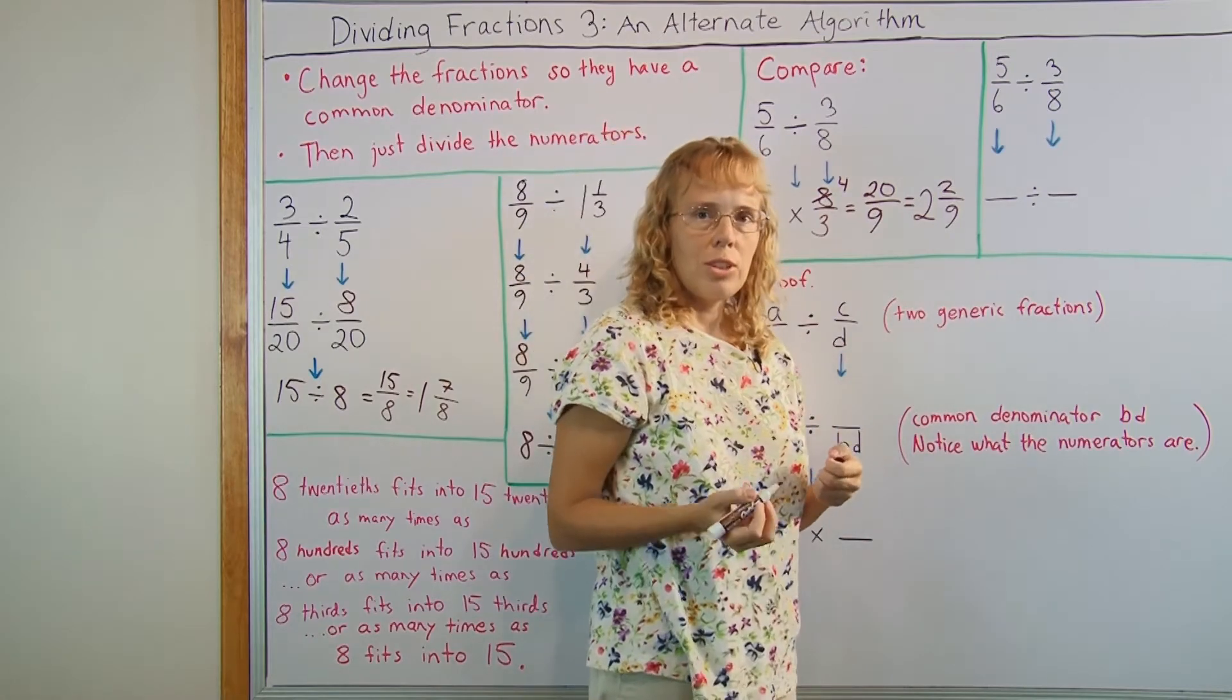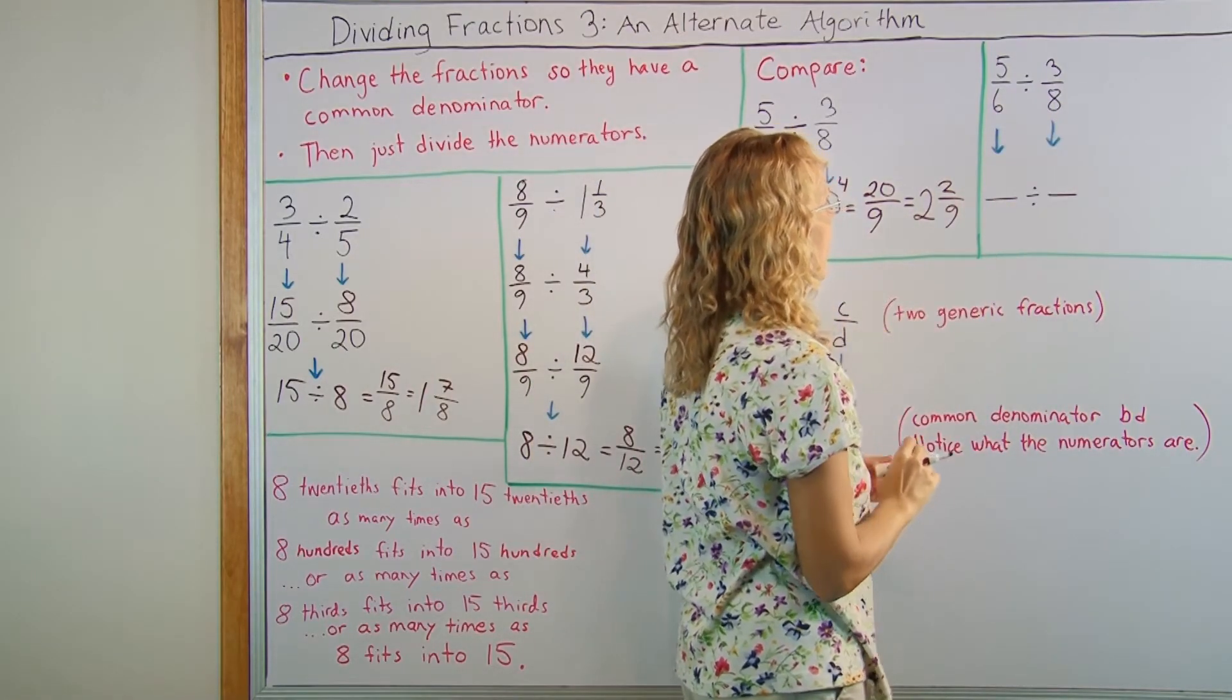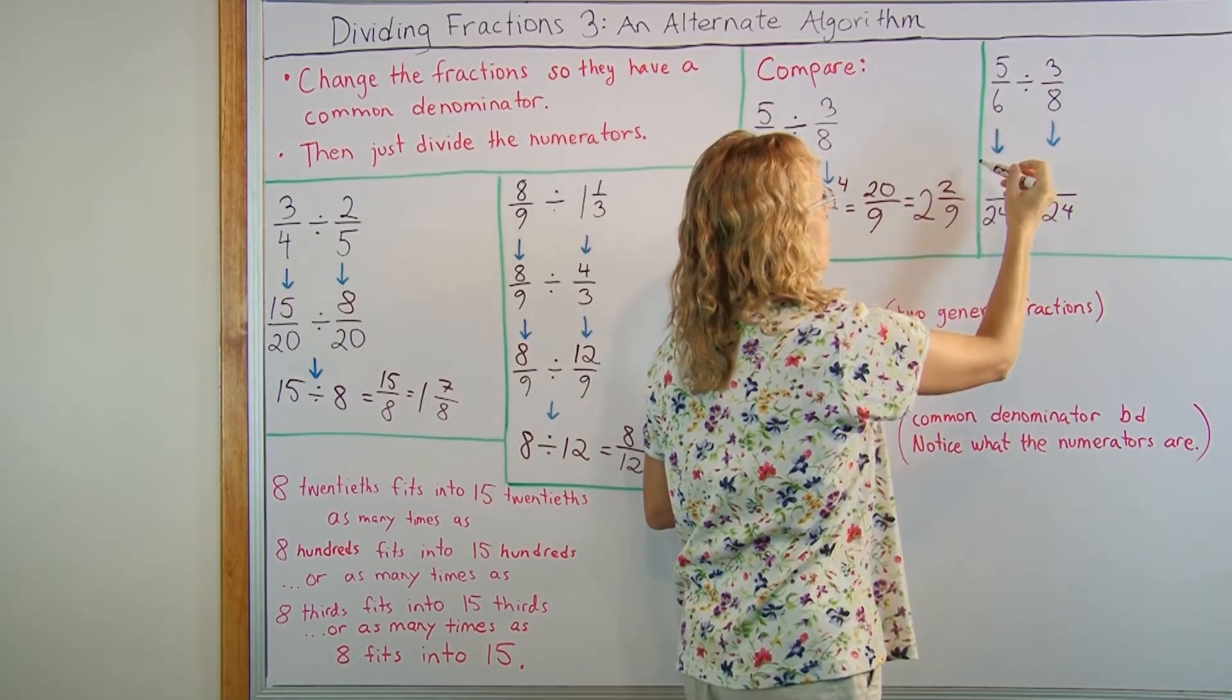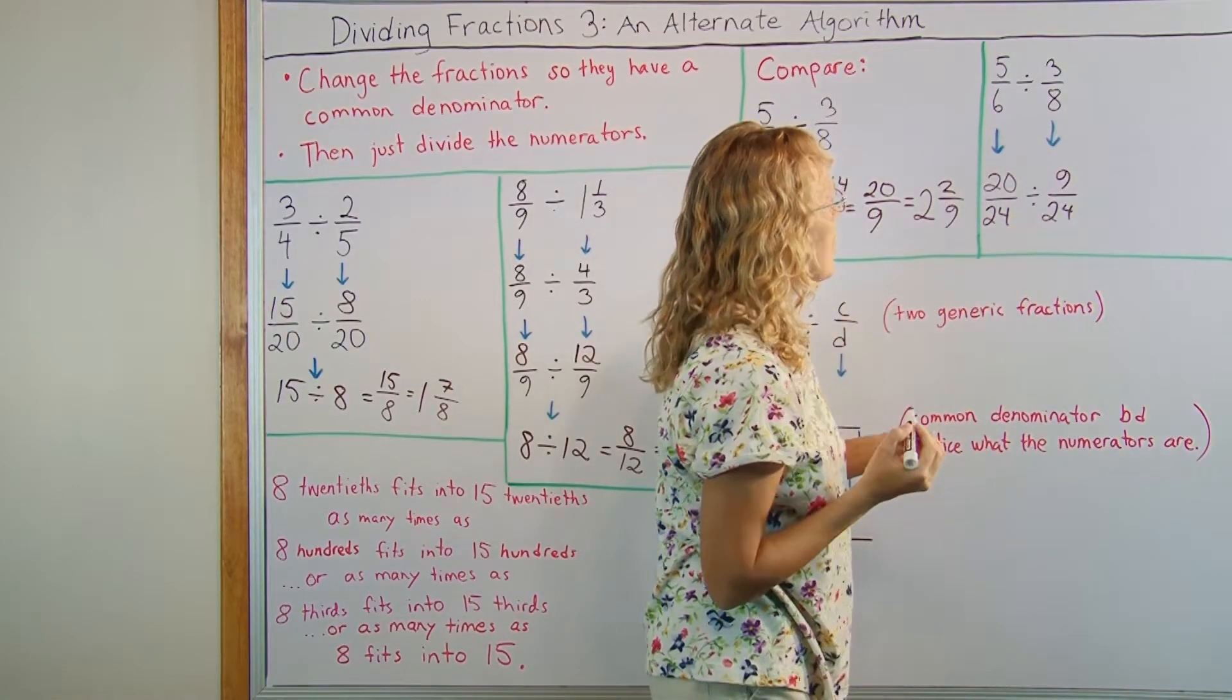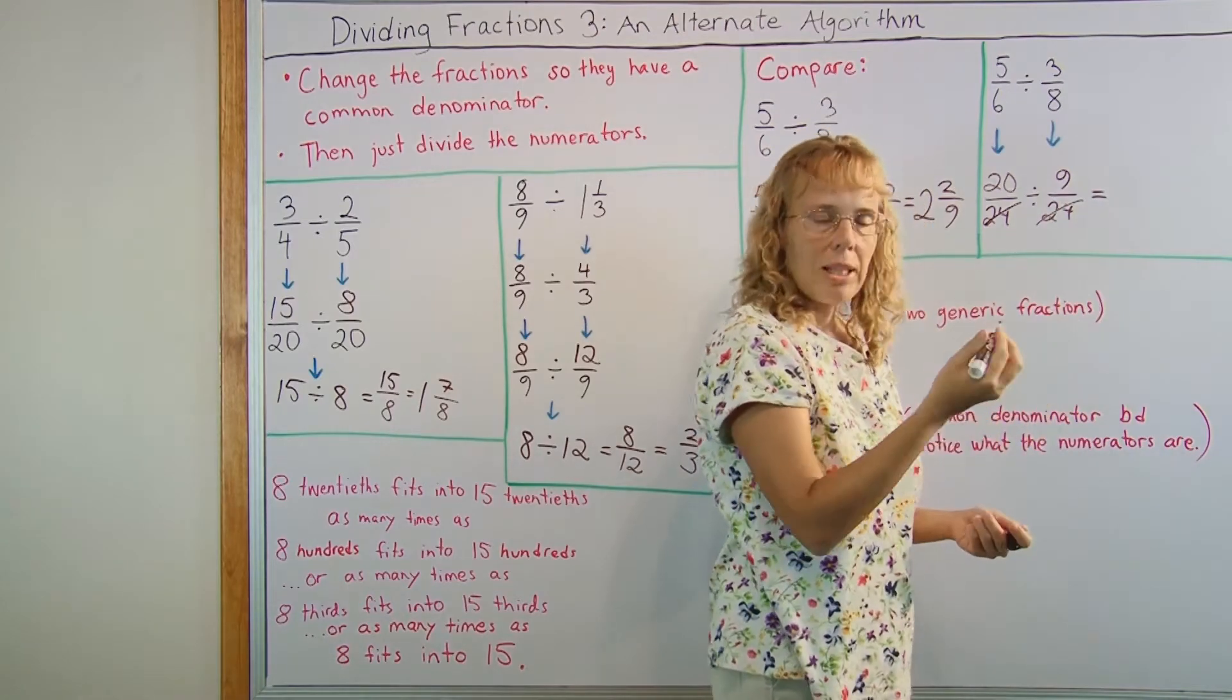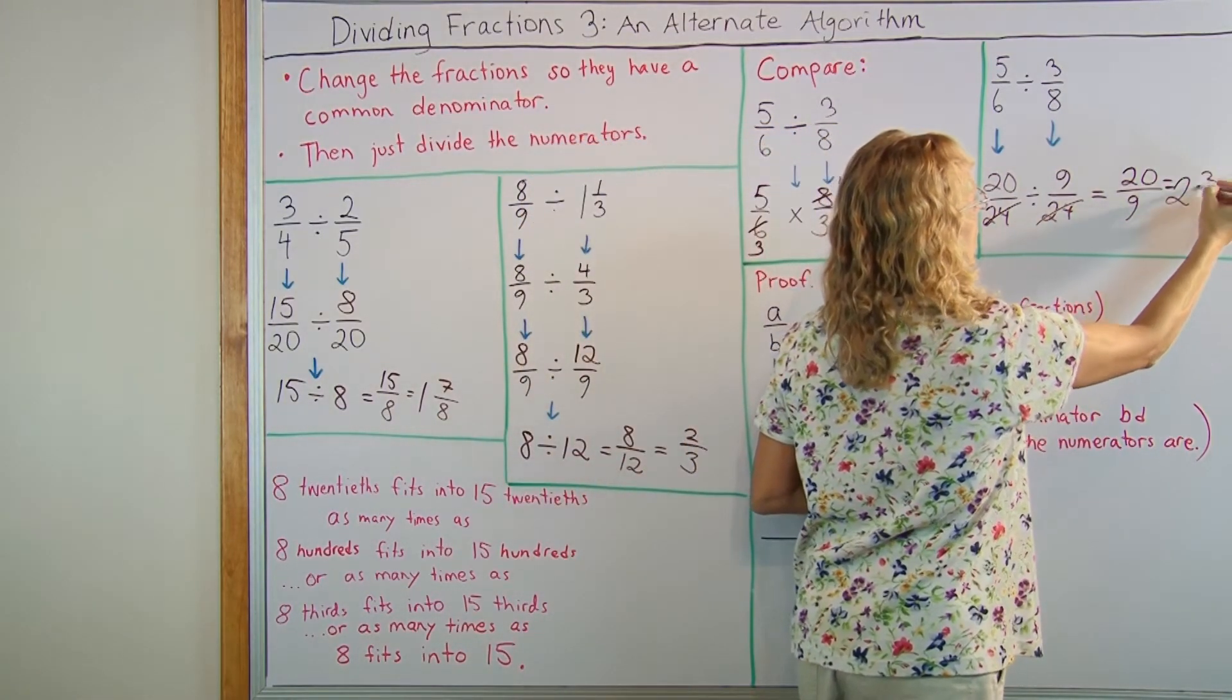And now with the new method we first need to find a common denominator. 6 and 8. I know 24. 24 will work. And so I have 6 times 4 is 24. 5 times 4 is 20. And then 8 times 3 here so 3 times 3 is 9. Now I drop these denominators and my problem is 20 divided by 9. I will write it immediately here in this form. 20 divided by 9. Well we already see it's going to be the same as here. So 2 and 2 ninths.